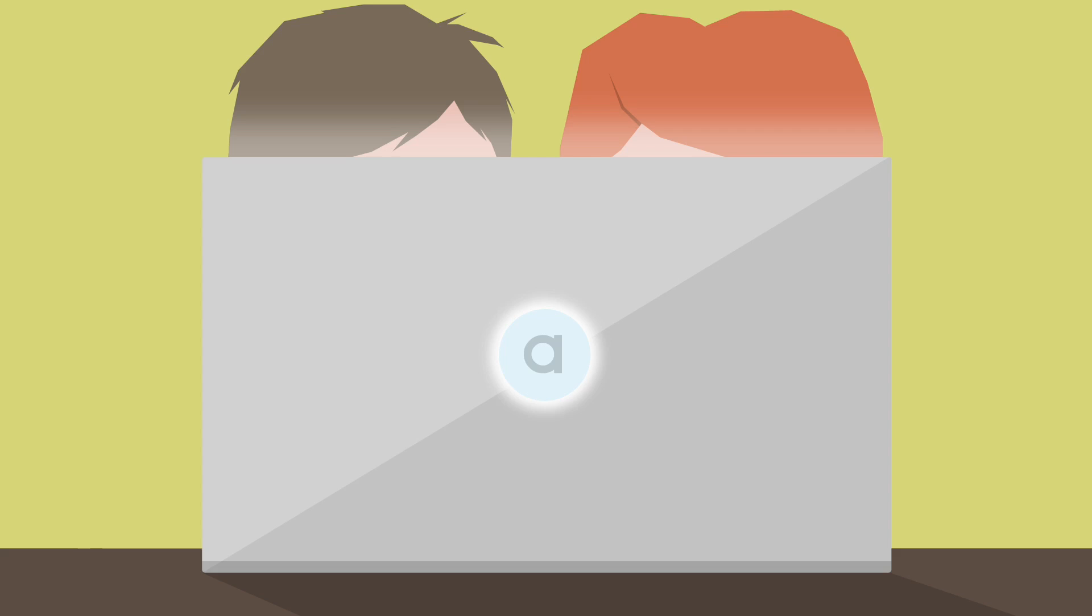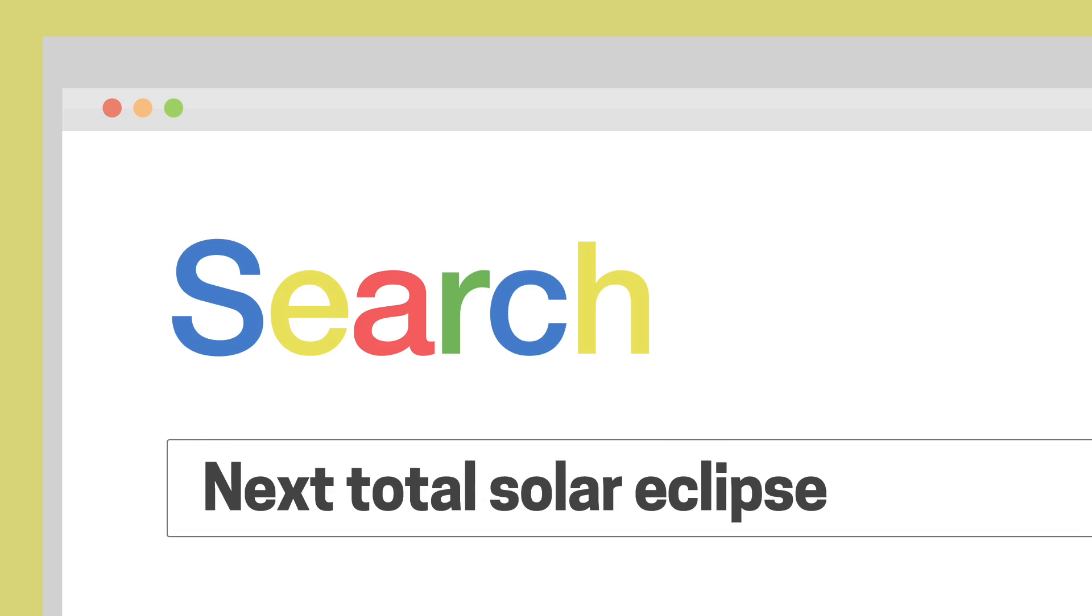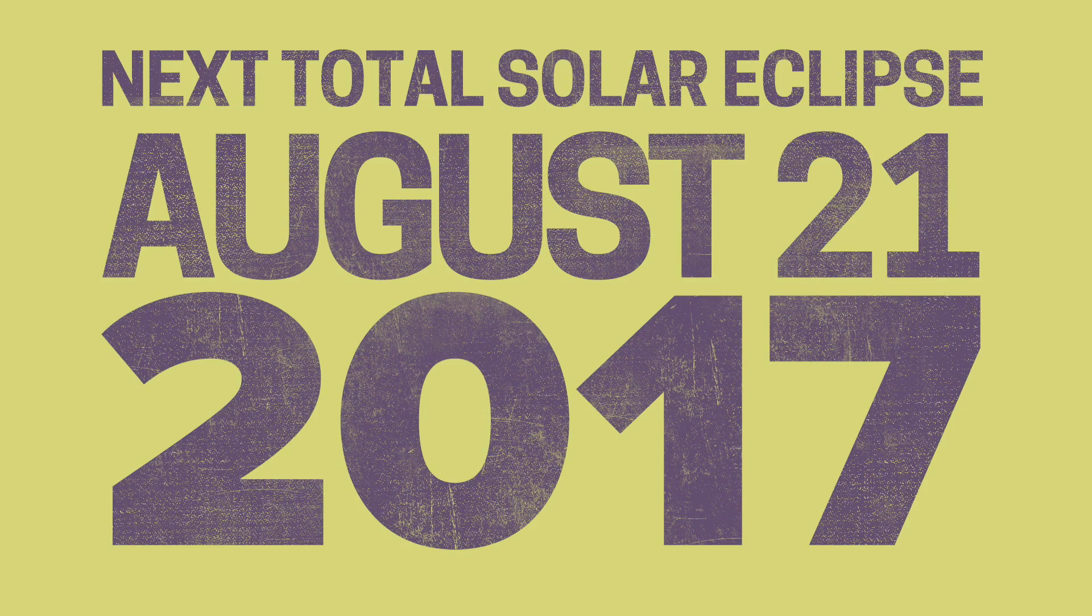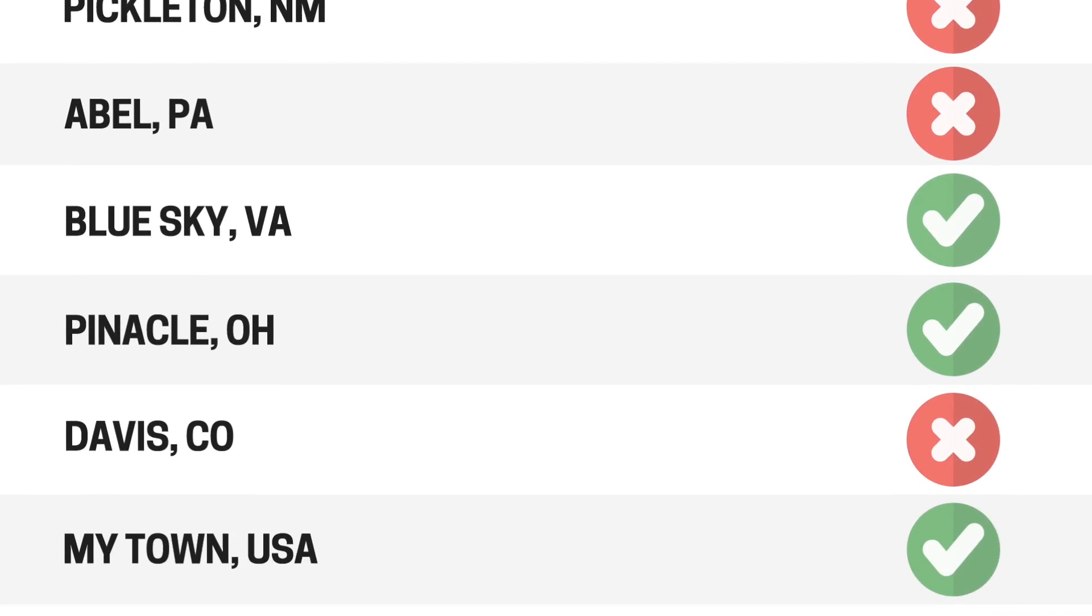You're probably asking, when and where can I see one of these? The next total solar eclipse occurs on August 21st of 2017, so check online to find out if your area will fall inside of the umbra. And whatever you do, don't miss it.